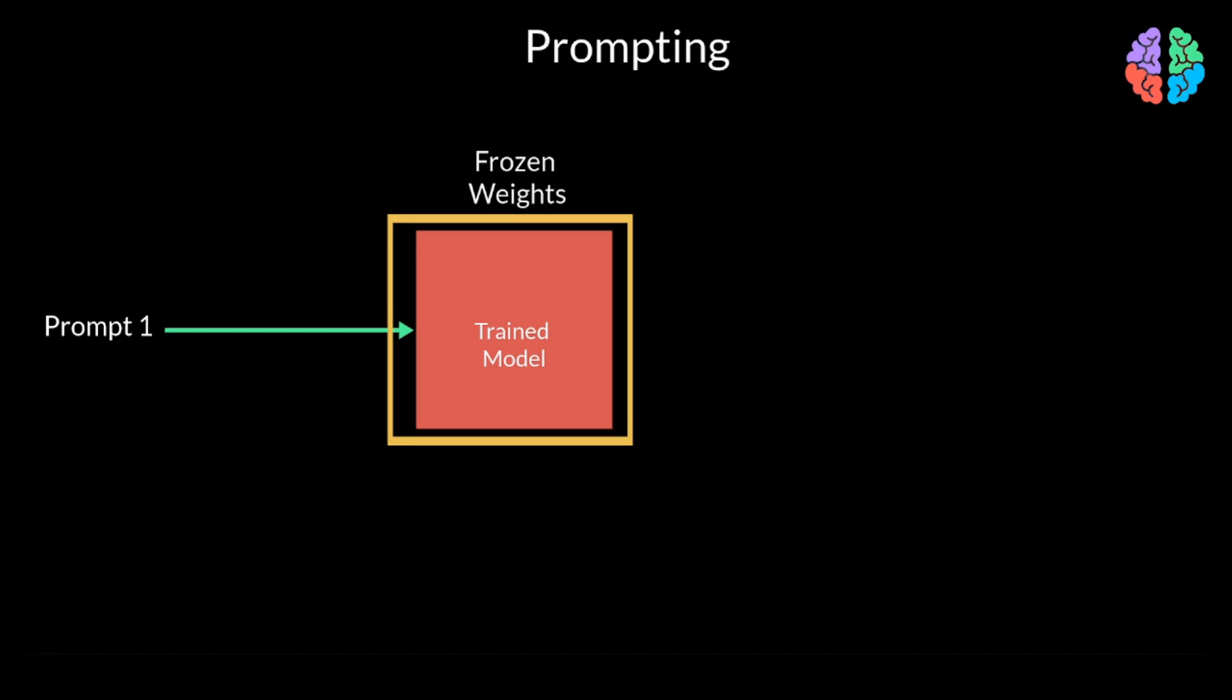You may now ask, how is it different from inference? Because we have been running trained models, deploying them and running inference on machine learning models. The point is that with inference, the input is fixed. We never ever change it and whatever the model gives as output, we accept it as the result.